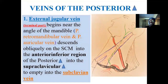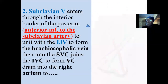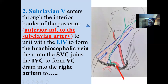Veins within the posterior triangle include the external jugular vein — formed by the union of the retromandibular vein and the posterior auricular vein — which enters the posterior triangle at its most inferior part to empty into the subclavian vein. The terminal part of the external jugular vein is what is seen. A part of the subclavian vein is also seen within the lower part of the posterior triangle, located anterior and inferior to the subclavian artery.